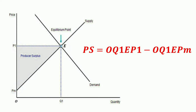The producer always tries to increase his producer surplus by selling more and more at higher prices. However, it is simply not possible to increase the producer surplus indefinitely, since at higher prices there might be very little or no demand for goods and services.